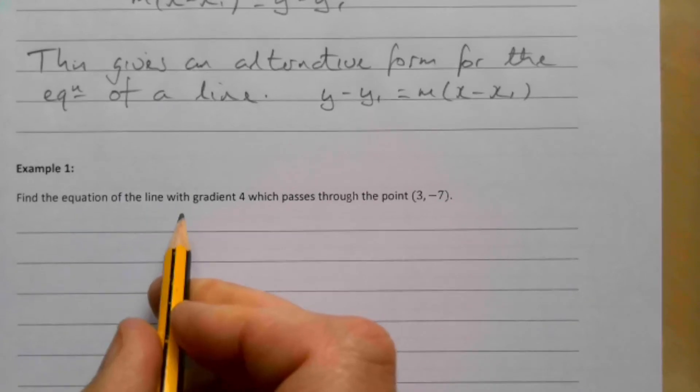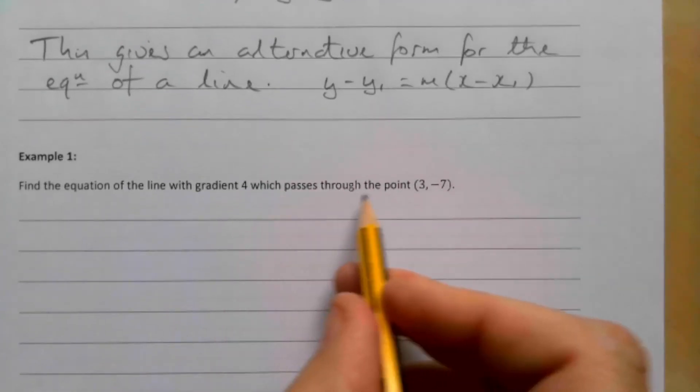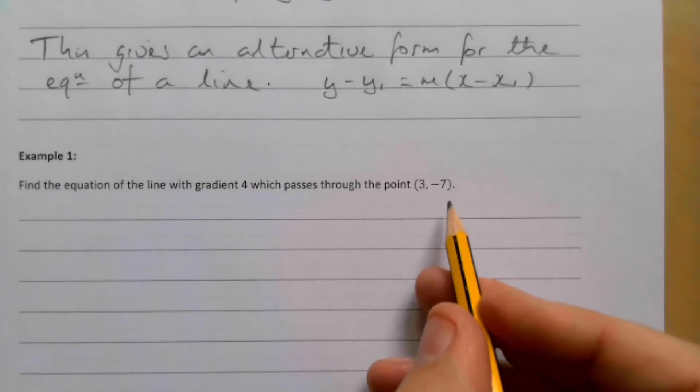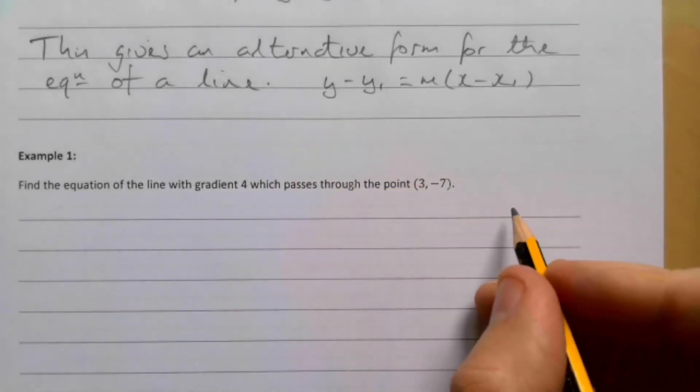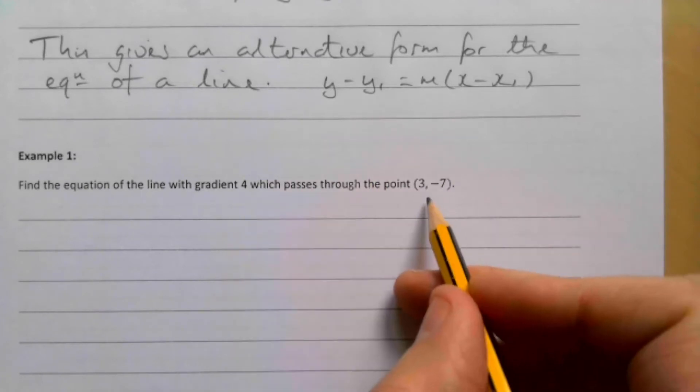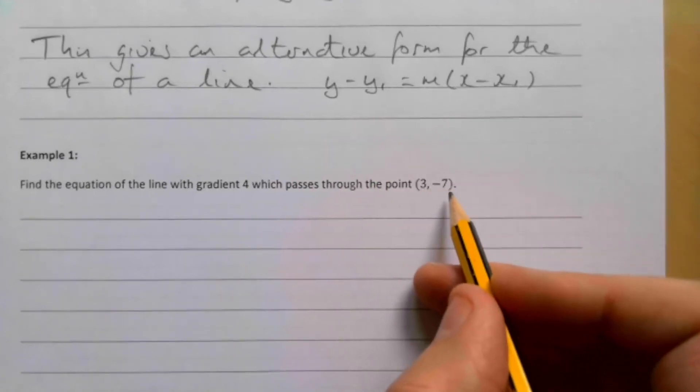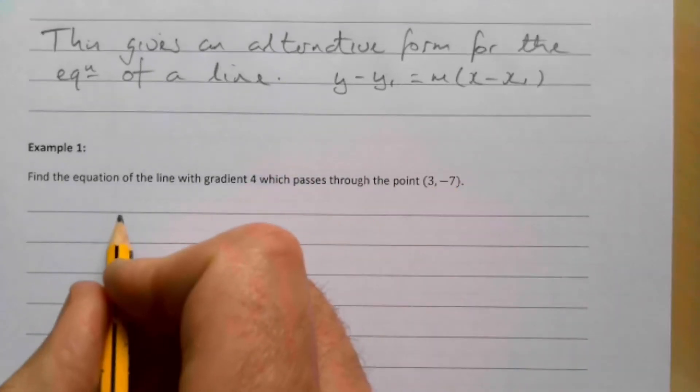Find the equation of the line with gradient 4, which passes through the point (3, -7). So we're actually going to use this one here. Of course, you can use y = mx + c. There's no problem with that. It's going to be y = 4x + c. Sub those in then to get your c. That's totally fine.